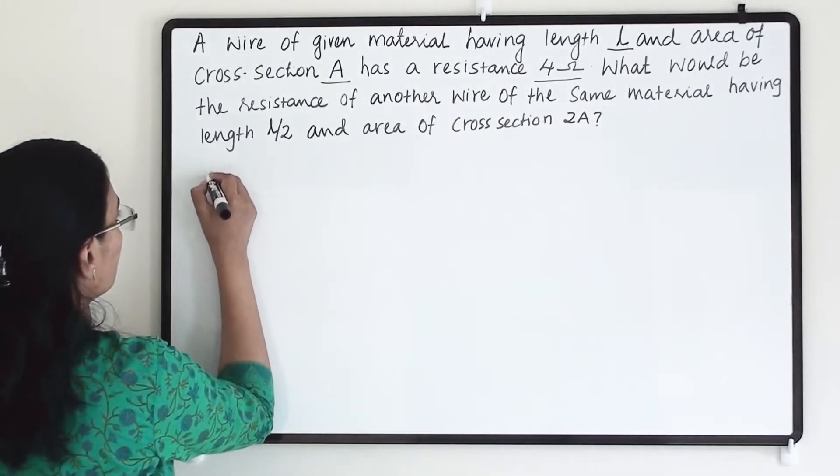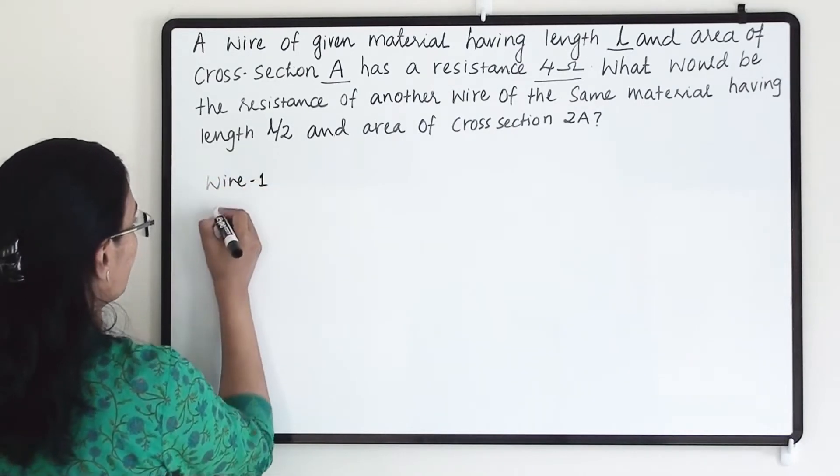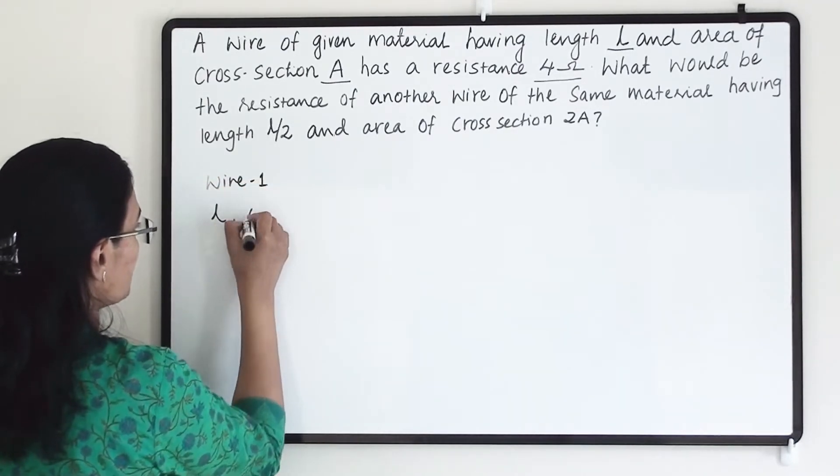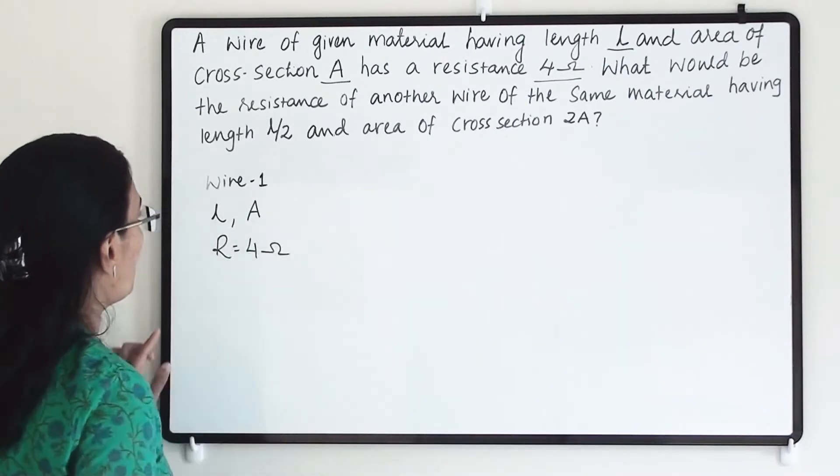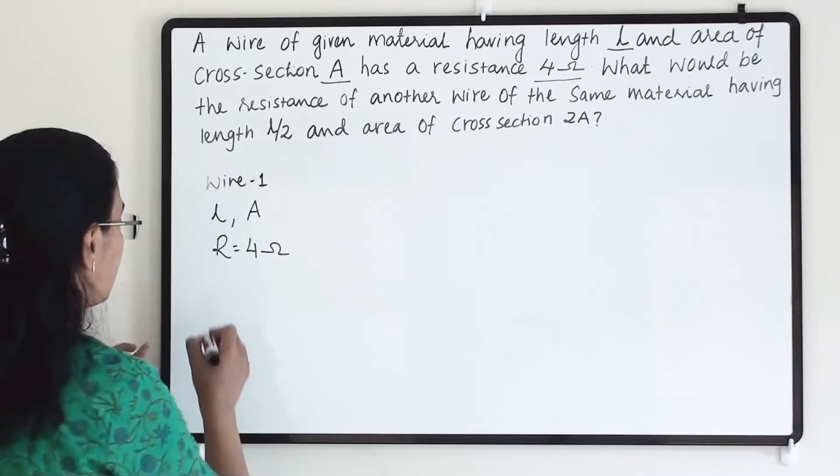So for wire 1, length is L, cross section area is A, and the resistance is 4 ohm.